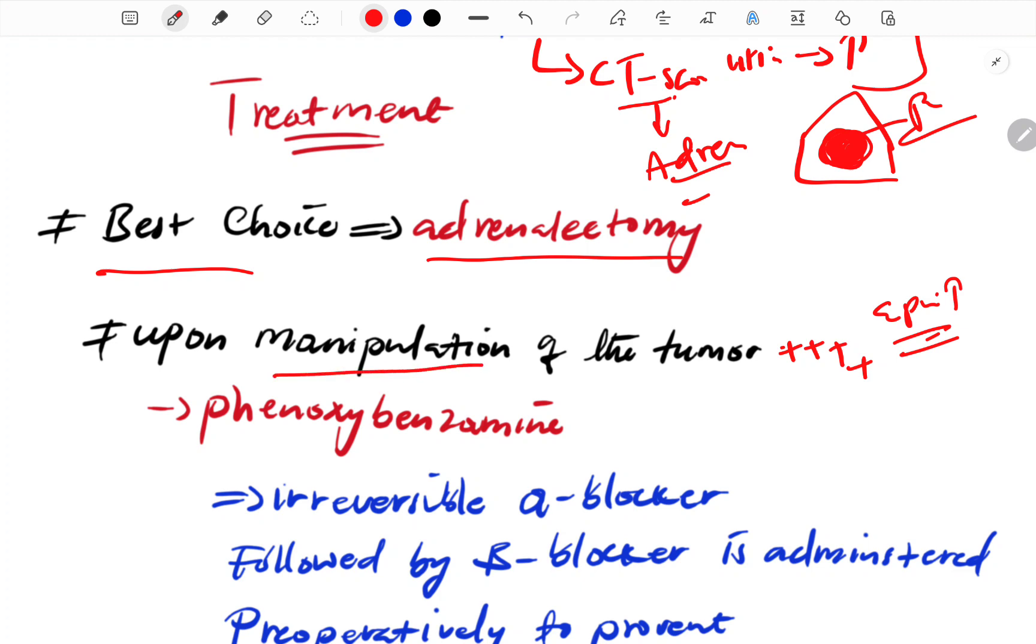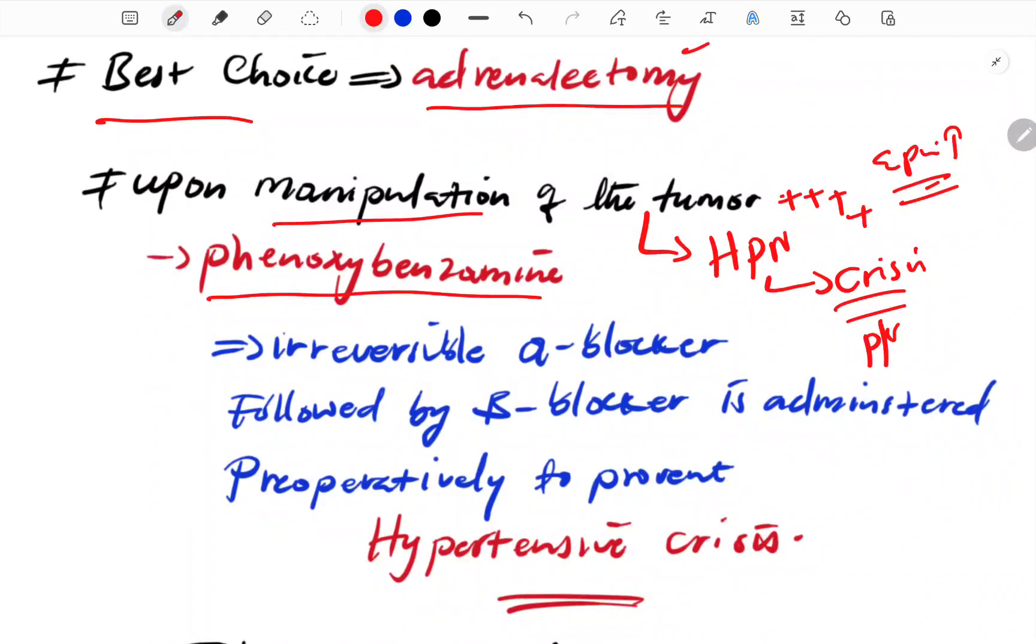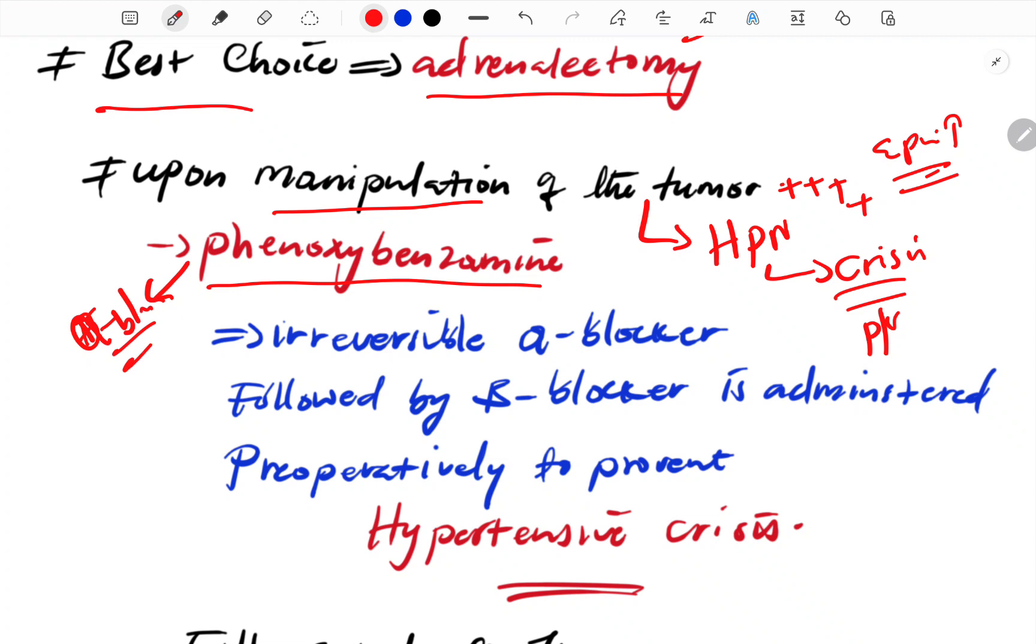During manipulation of the tumor at surgery, you can have hypertensive crisis. After surgery, you can also see hypertension crisis. Prevention is done using alpha blockers and beta blockers.